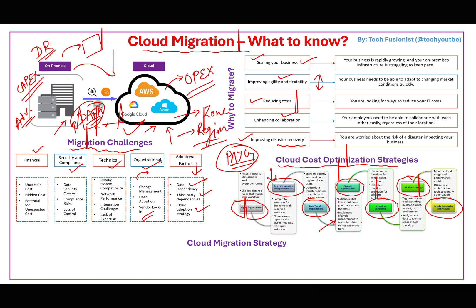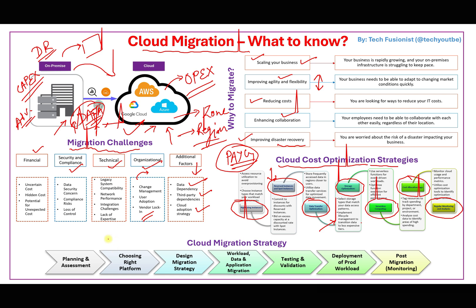Now let's talk about migration strategy phases. It always starts with the planning phase — you need to plan well, assess your existing applications and services, and understand whether they will work in the cloud. Once confident in planning and assessment, choose the right platform: Azure, AWS, GCP, or another cloud provider, depending on which is most compatible with your services.